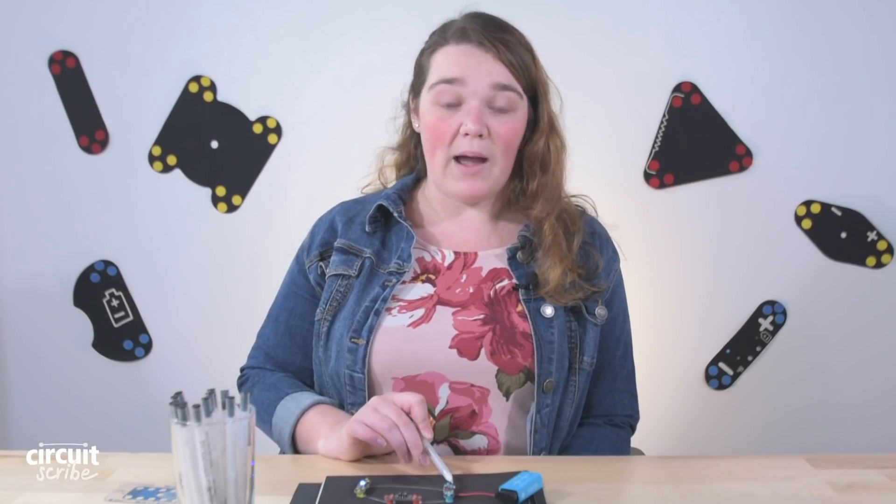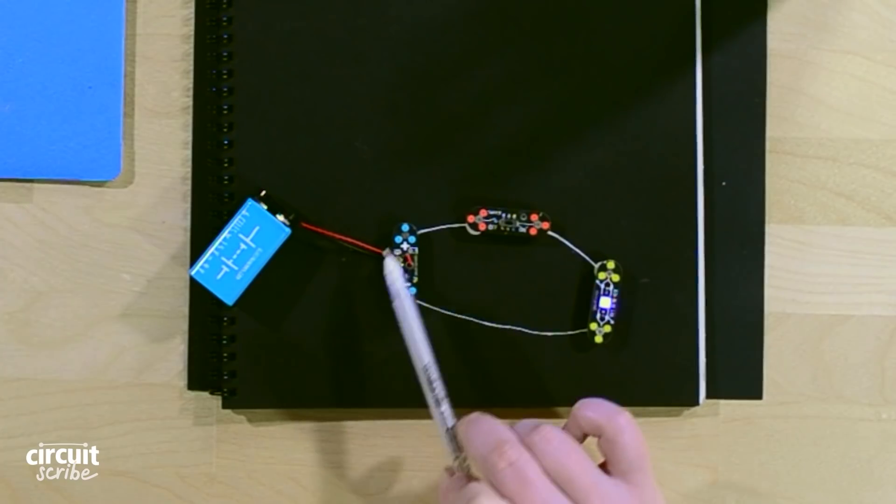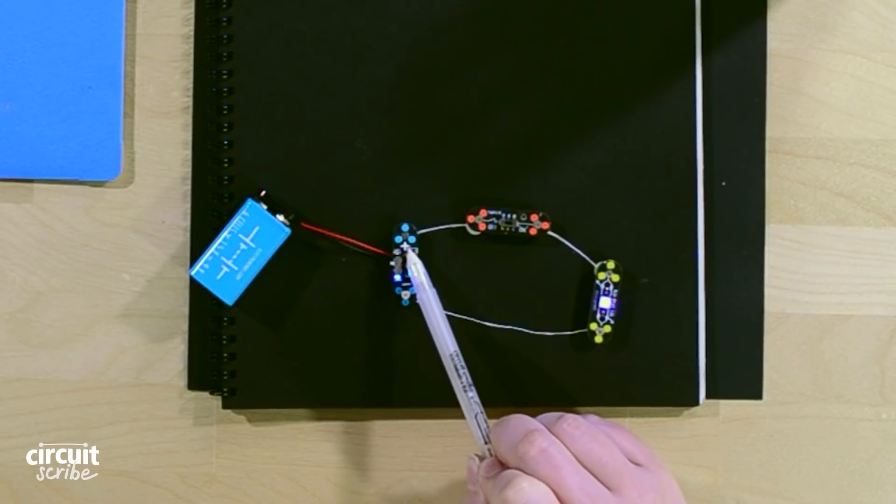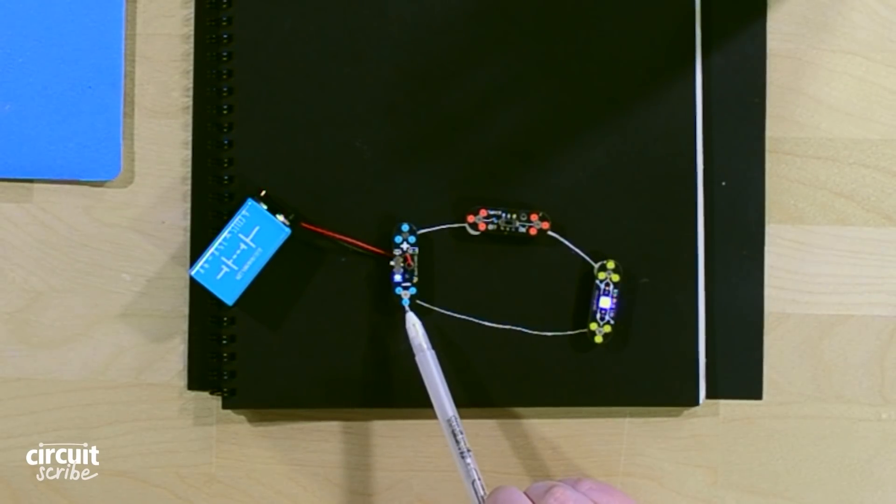So now we have a complete circuit. We have our power module, our switch module, and our LED module. When the switch is on, we're able to get current to go from the battery all the way through it, lighting up the LED and back to ground making a complete circuit.